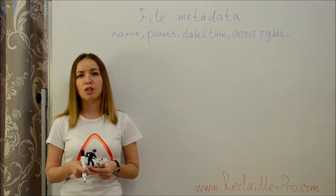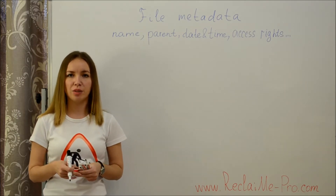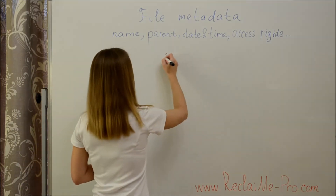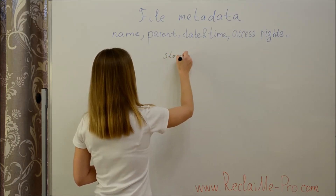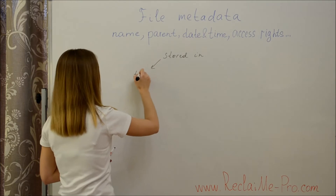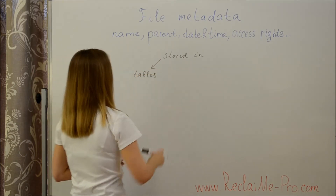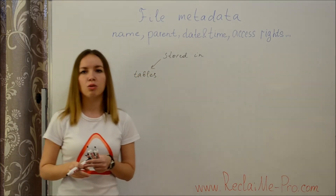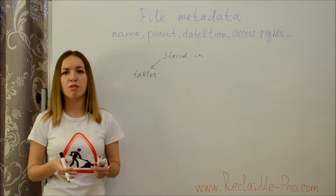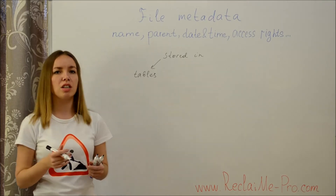In some file systems, the time of the last access and the time of file deletion are stored in metadata as well. A file system often needs to find and change metadata quickly. Metadata can be stored in tables; however, it can be rather difficult to find the needed record in a table, since a file system may need to go through the entire table.